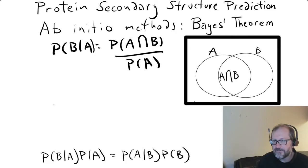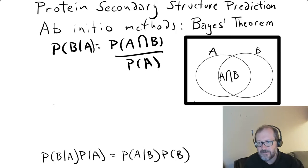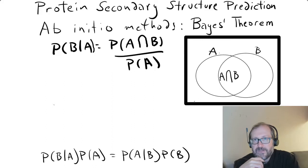The next method is called Naive Bayes, but before we get into that we need to lay down some groundwork — specifically, we're going to need Bayes theorem.